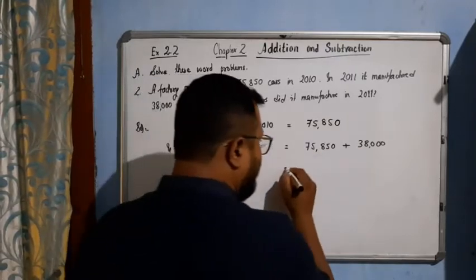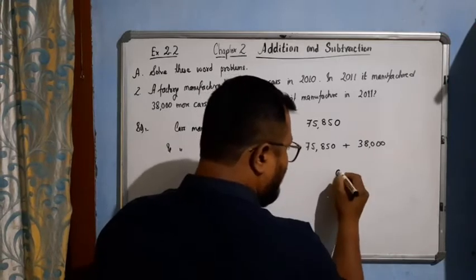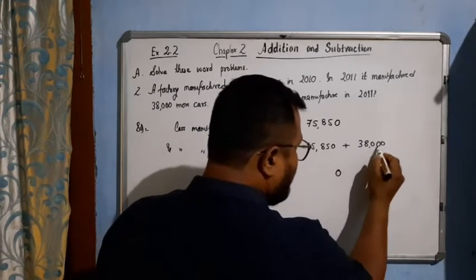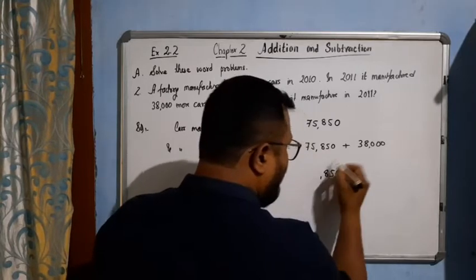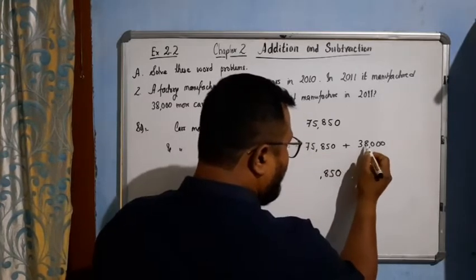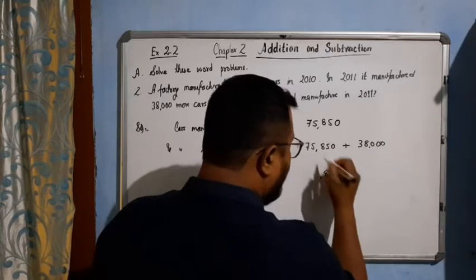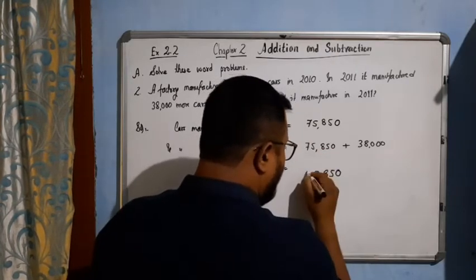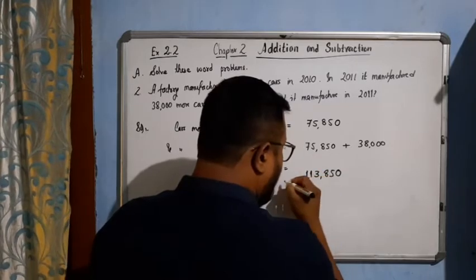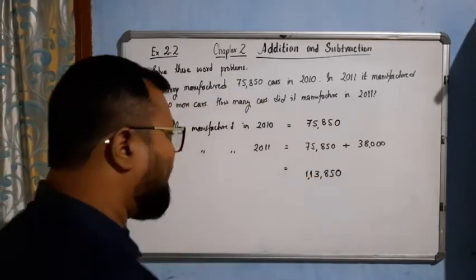What will be the answer here? See, 0 plus 0 is 0. Then 5 plus 0 is 5. 8 plus 0 is 8. Now 5 plus 8 is 13, carry 1. 7 plus 3, 10 plus 1 is 11. So it is 1,13,850 cars.